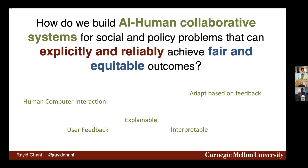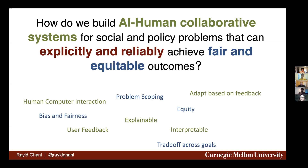Another area is how do we make these systems fair and equitable, thinking about it at the outcomes level — how do we define equity upfront when scoping the problem, measure bias and fairness, and trade off when trade-offs exist. An interesting recent unpublished result: people assume there's a trade-off between accuracy and bias, but we're finding that in many real problems — a certain class of problems — there is actually no empirical trade-off. You can achieve the same level of performance and reduce bias significantly.